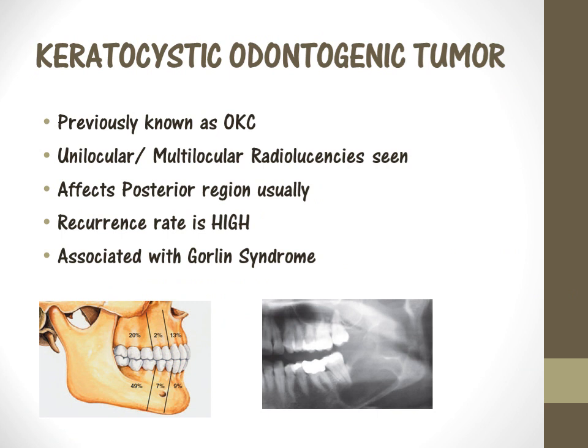The next cyst we are going to talk about is the keratocystic odontogenic tumor. This cyst was earlier called odontogenic keratocyst, but this terminology has been eliminated and it is now termed keratocystic odontogenic tumor. This tumor can be either unilocular or multilocular radiolucency. Previously, dentigerous cyst is always unilocular, meaning there is only one locule, but in keratocystic odontogenic tumor, you can have multiple locules as well. This type of tumor most commonly affects the posterior region of the maxilla or mandible.